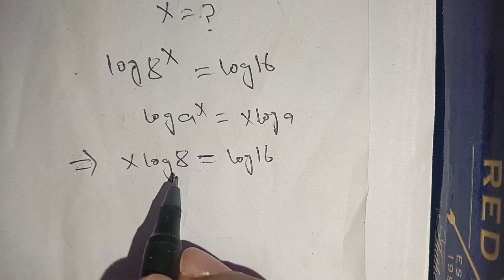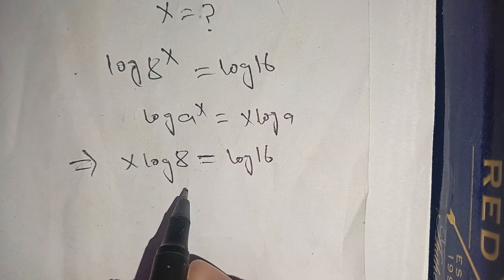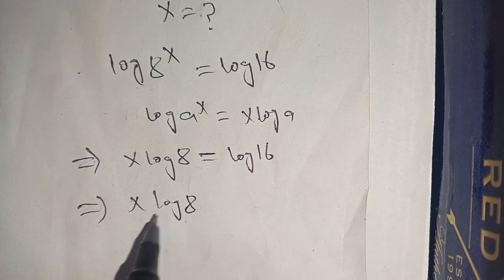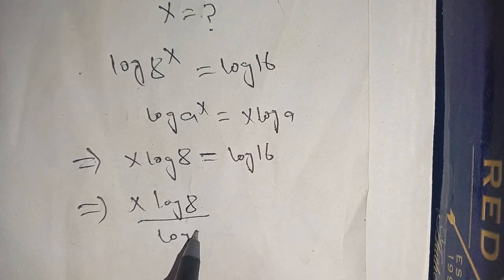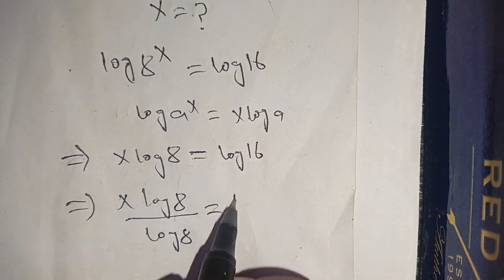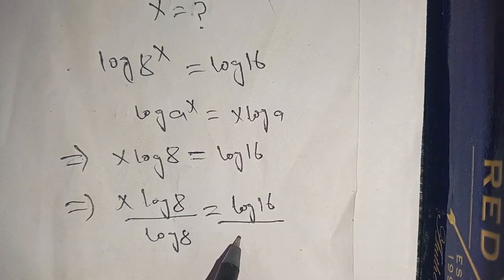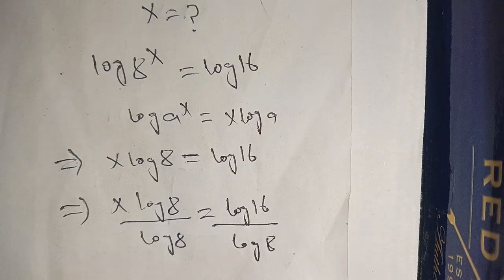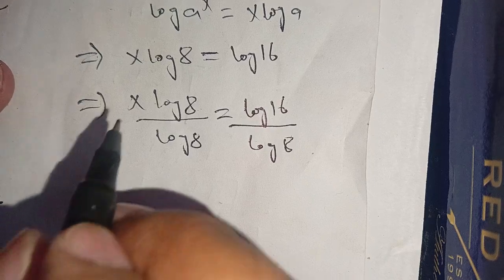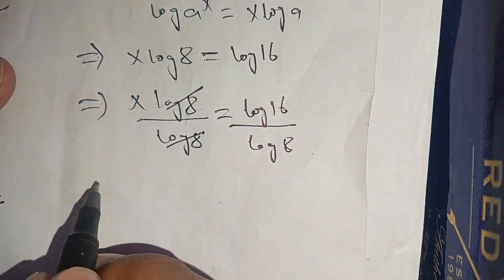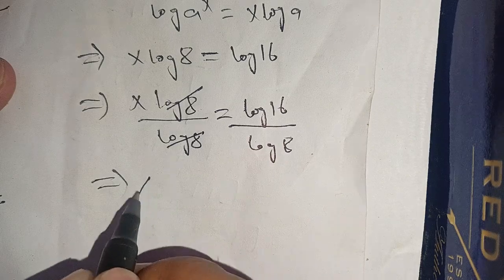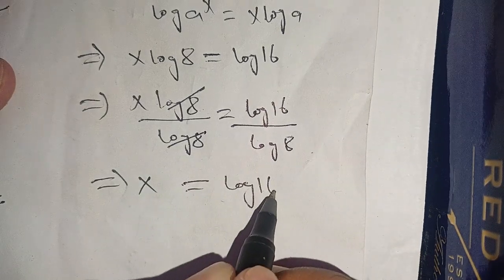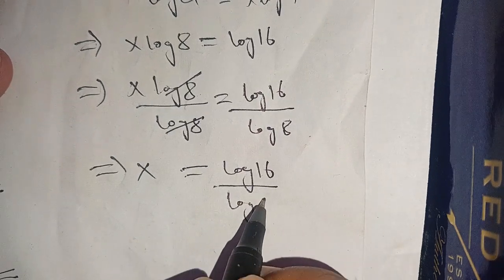Now in the next step, dividing both sides by log of 8, we get x log of 8 divided by log of 8 is equal to log of 16 divided by log of 8. We can cancel out log of 8 on the left, so our equation becomes x is equal to log of 16 divided by log of 8.